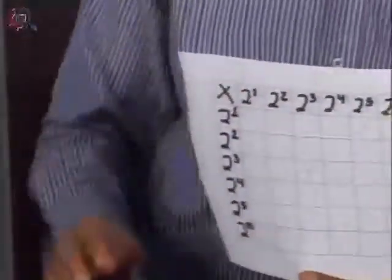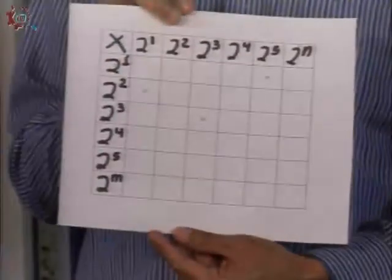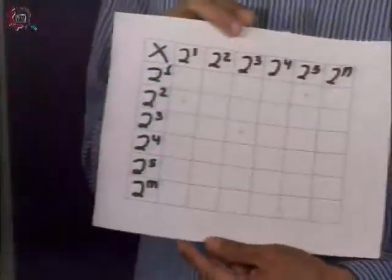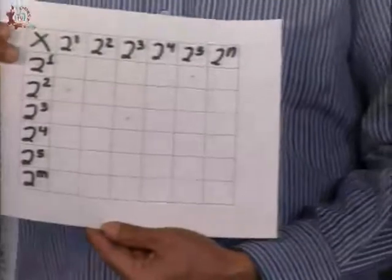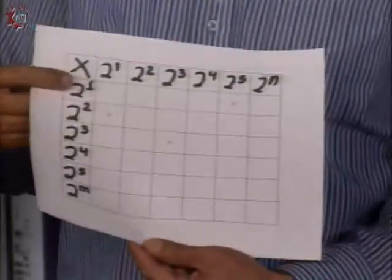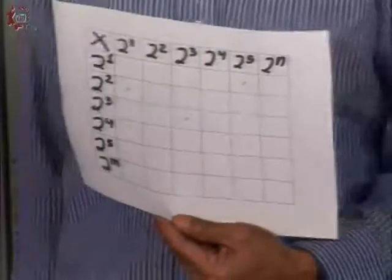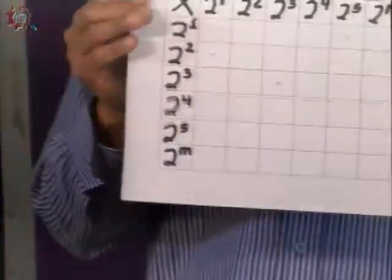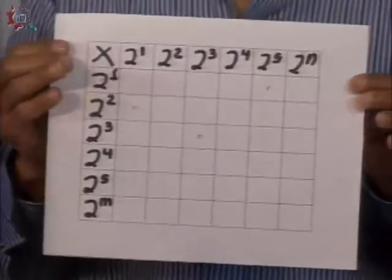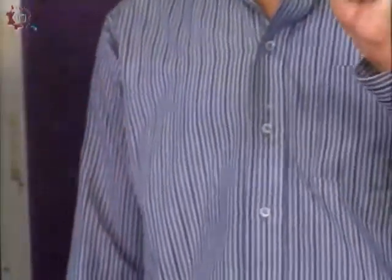Ahora, te voy a dejar una actividad. Vas a hacer o construir una tabla lo suficientemente grande en tu cuaderno. Esa tabla la divides en cuarenta y nueve cuadritos, de los cuales vas a ir poniendo en cada uno de ellos la potencia ya abreviada. ¿Por qué? Porque vas a multiplicar, por ejemplo, dos a la uno por dos a la uno, y es lógico que te da dos a la dos, porque estás sumando los exponentes. La vas a completar con los ejemplos, con la explicación que te acabo de dar. Si tienes duda, nos vemos en la plataforma de Kuiper.